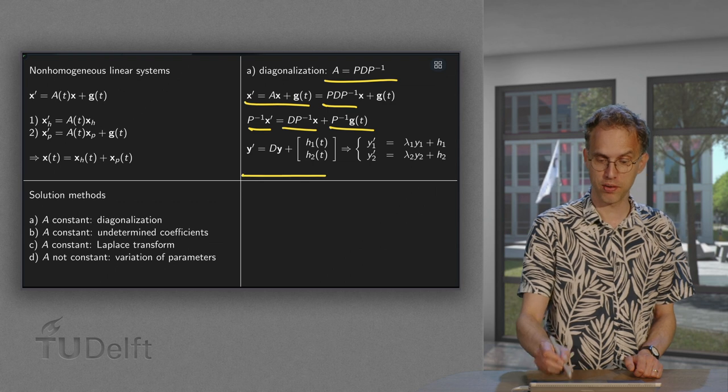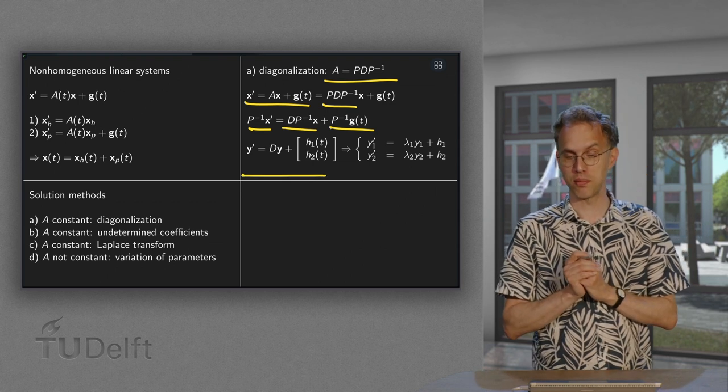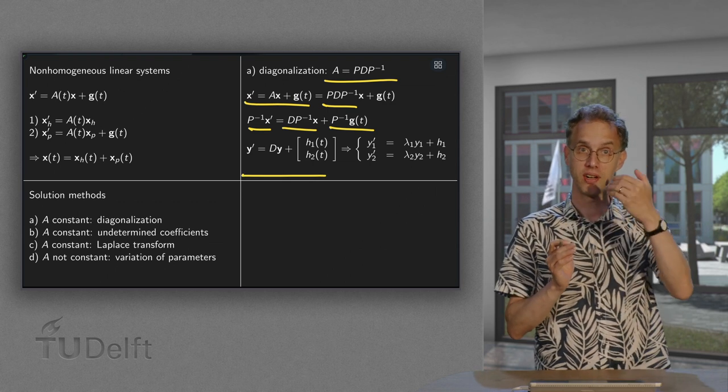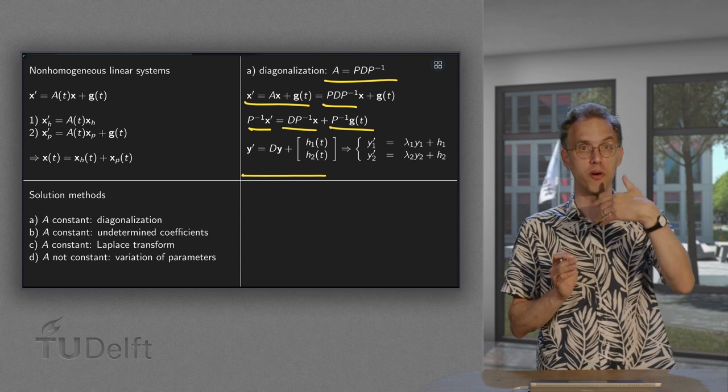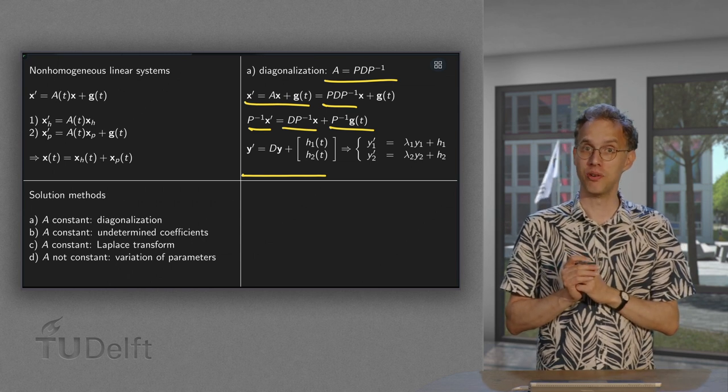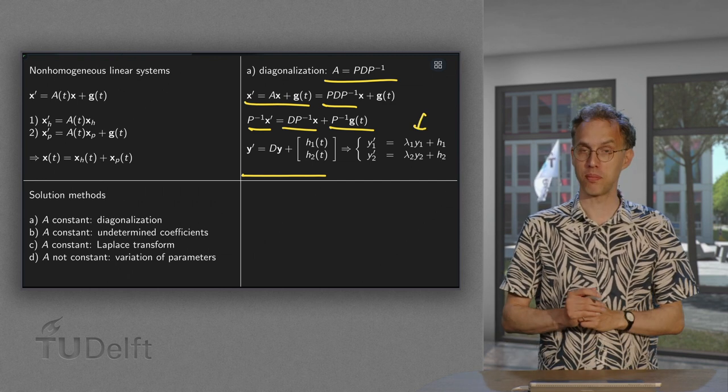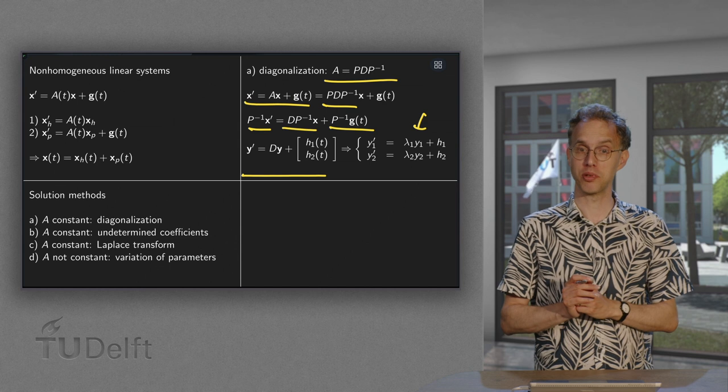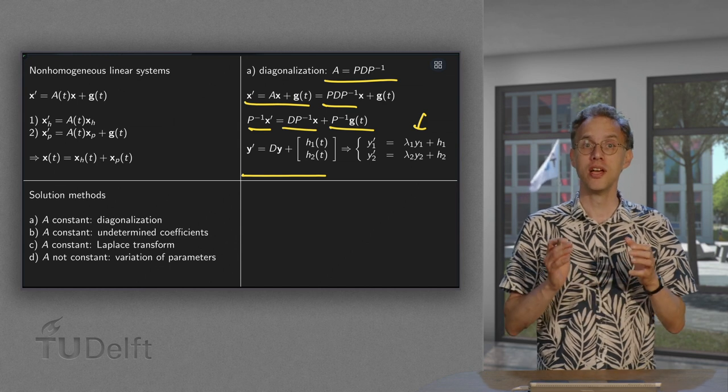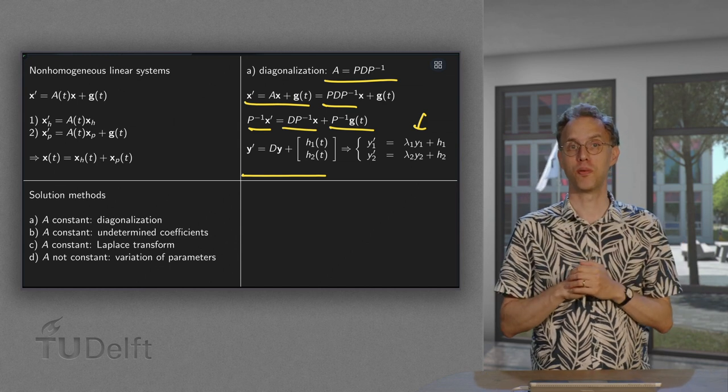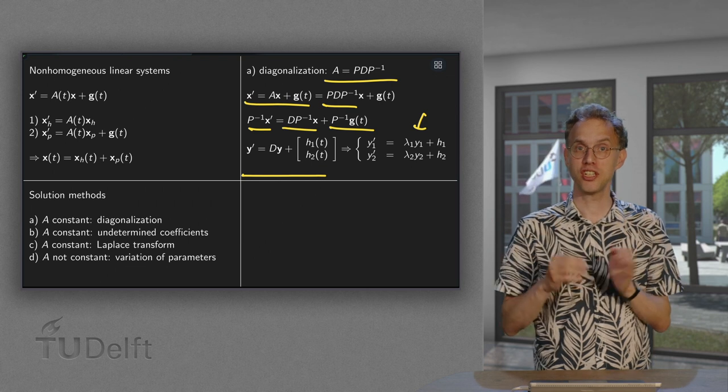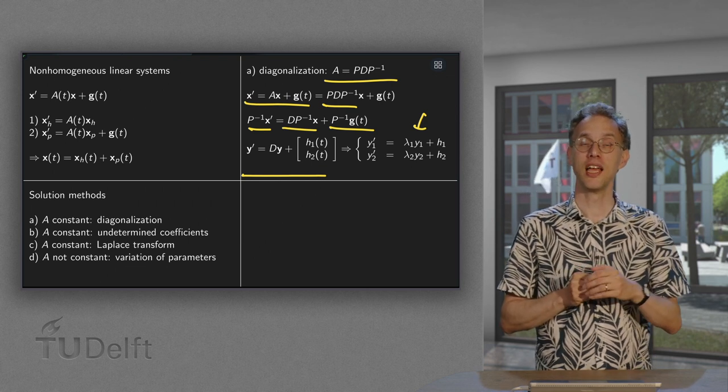So your problem becomes y prime equals D times y plus a vector. Say call those components h1 and h2. What happens if you write down any components? You have y1 prime equals lambda 1 times y1 plus h1 and y2 prime equals lambda 2 times y2 plus h2. So now you have decoupled two problems. So instead of a system of differential equations, you now have two differential equations which are uncoupled.